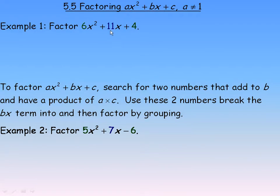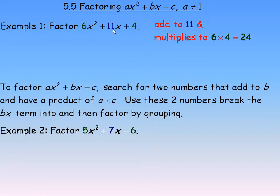In the first example, we are asked to factor 6x squared plus 11x plus 4. You still look for two numbers that add to the middle coefficient — they have to add to 11 in this case. But instead of just multiplying to 4, since the coefficient of x squared is not 1, the two numbers you are looking for add to 11 and multiply to the product of 6 and 4, which is 24.